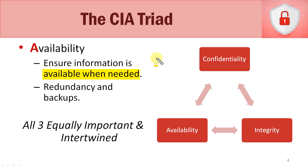To sum up, this lecture was all about the CIA triad — confidentiality, integrity, and availability — and remember that they are all equally important. If you're ever taking an exam and someone asks which one is most important, the answer is that they're all equally important. It's a trick question trying to get you to say one is more important than the others.